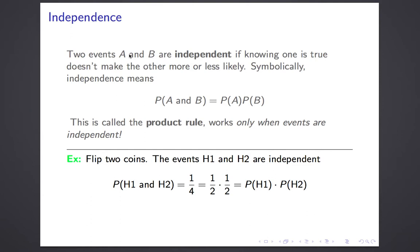The product rule and independence get used in two very different and complementary ways. On the one hand, in many physical situations like flipping coins, you can recognize from the setup that events have to be independent, and in that case it allows you to use the product rule to do calculations. On the other hand, in many situations you want to know if events are independent — if you're able to compute the probabilities, you can use the product rule to test whether events are independent and then conclude something about their relationship.